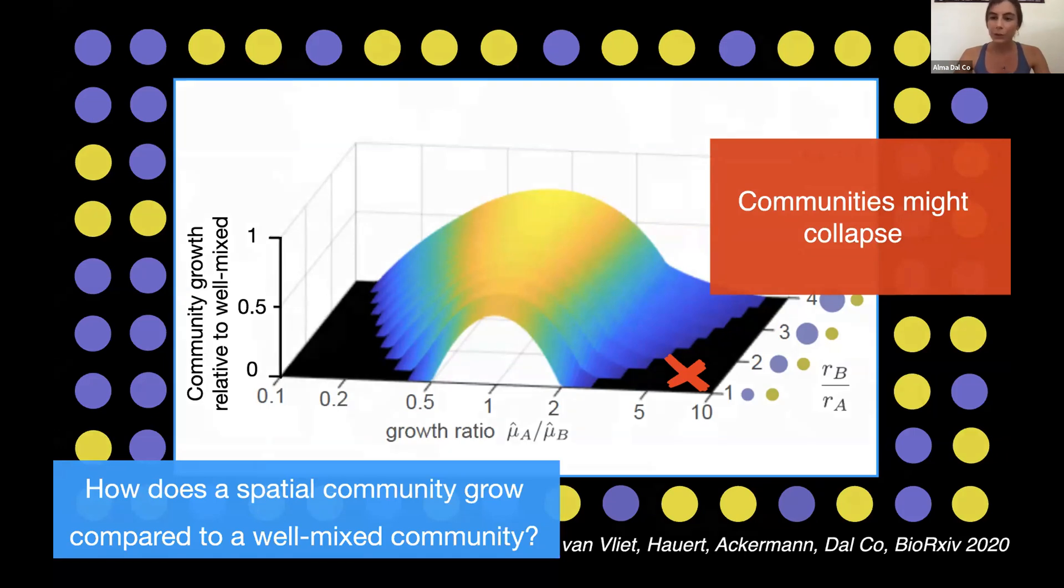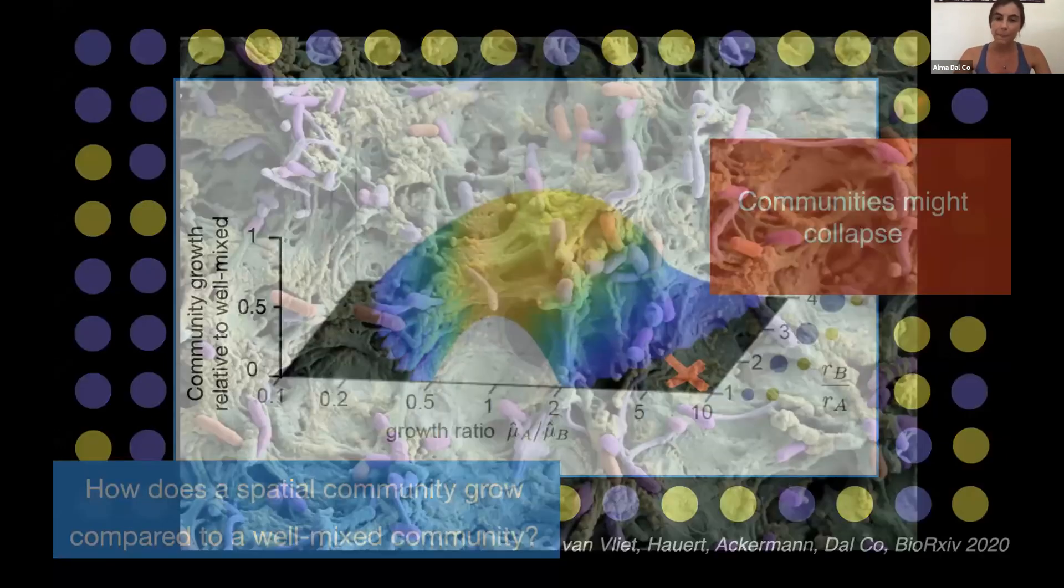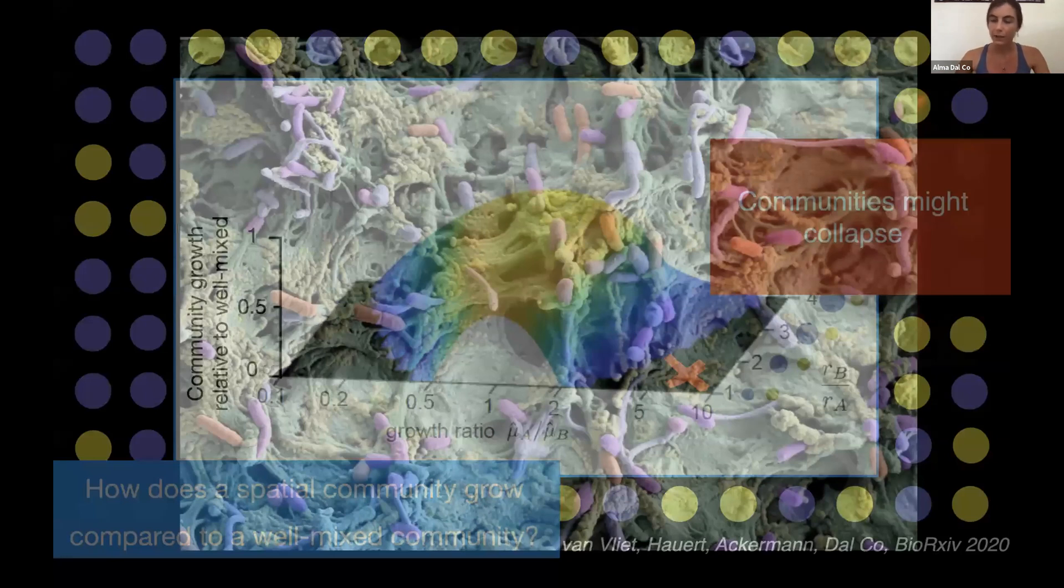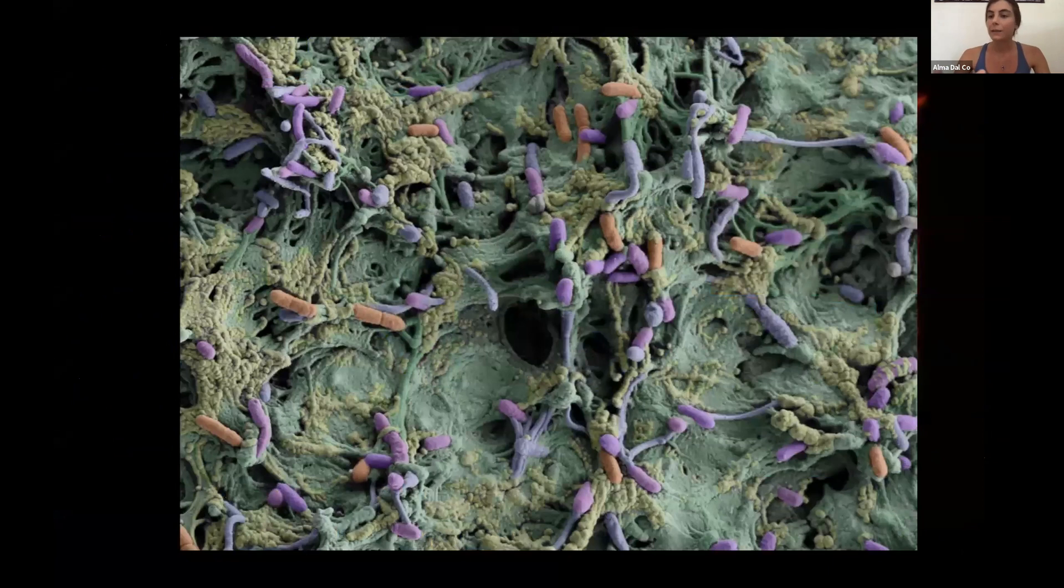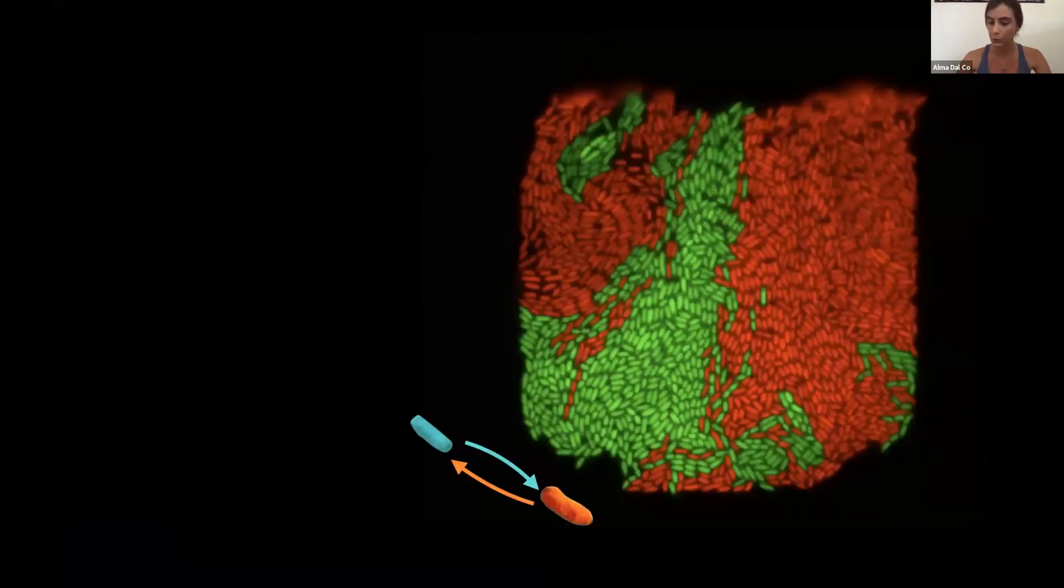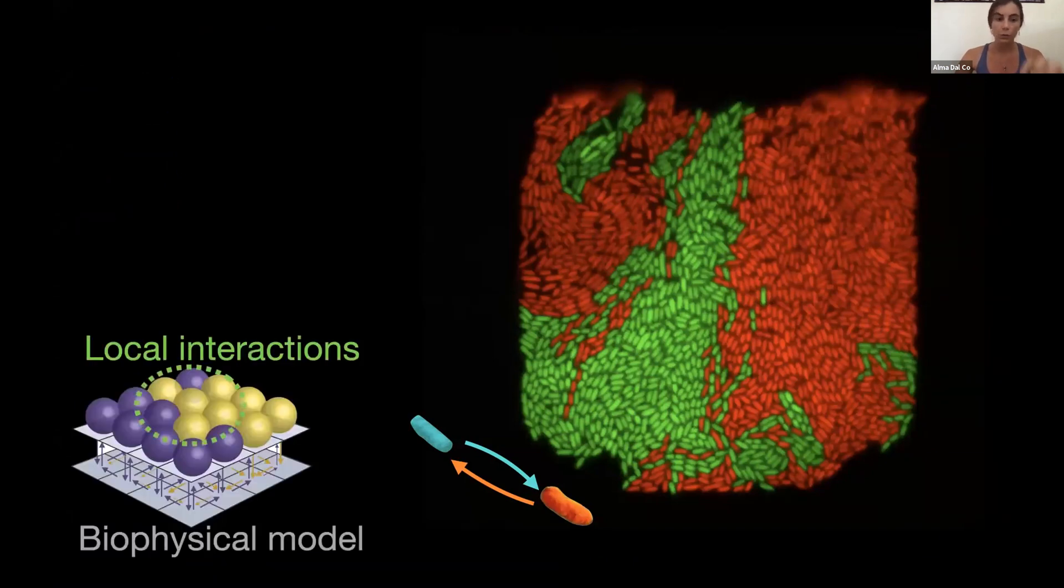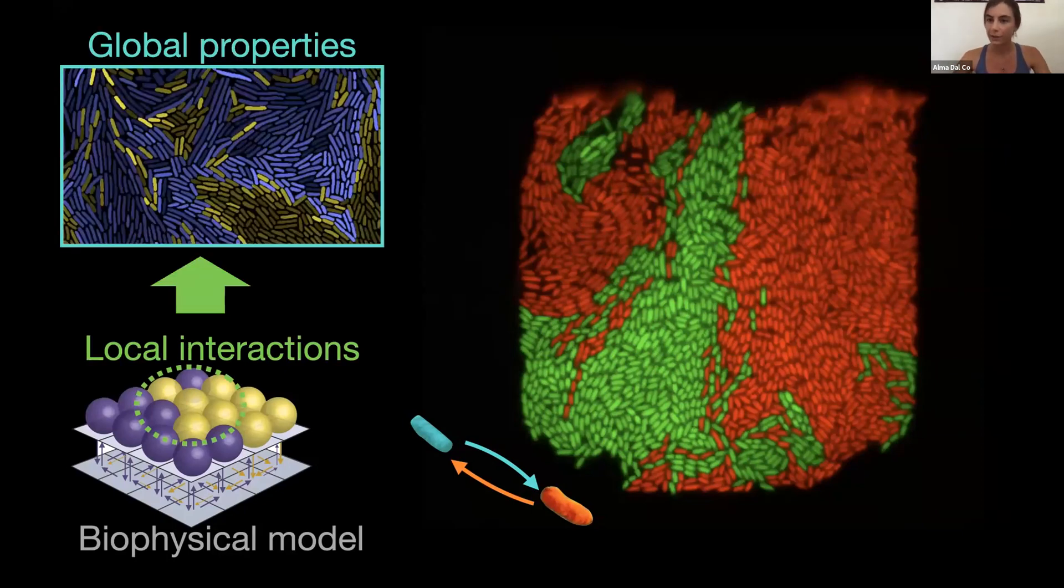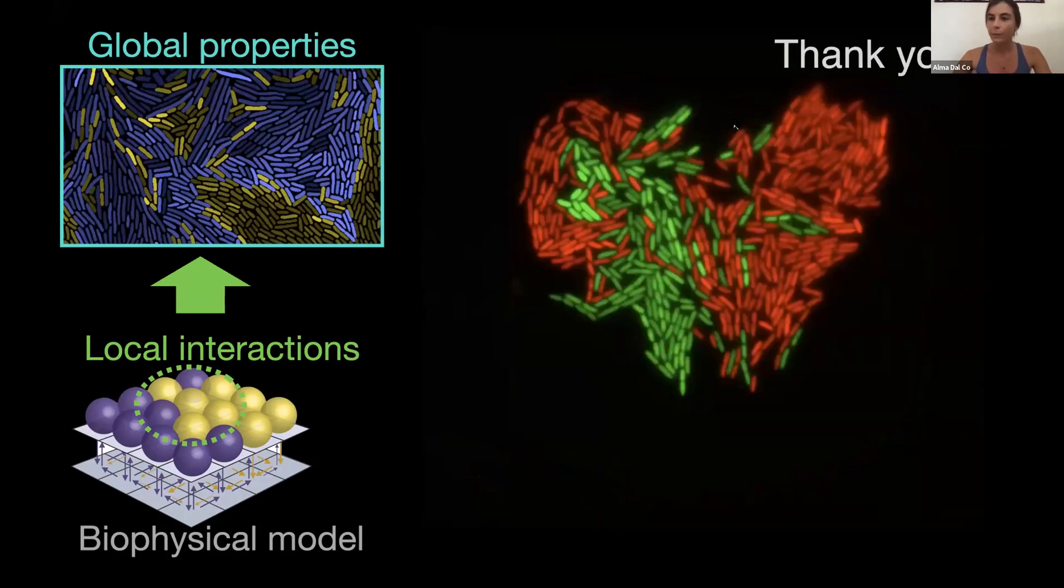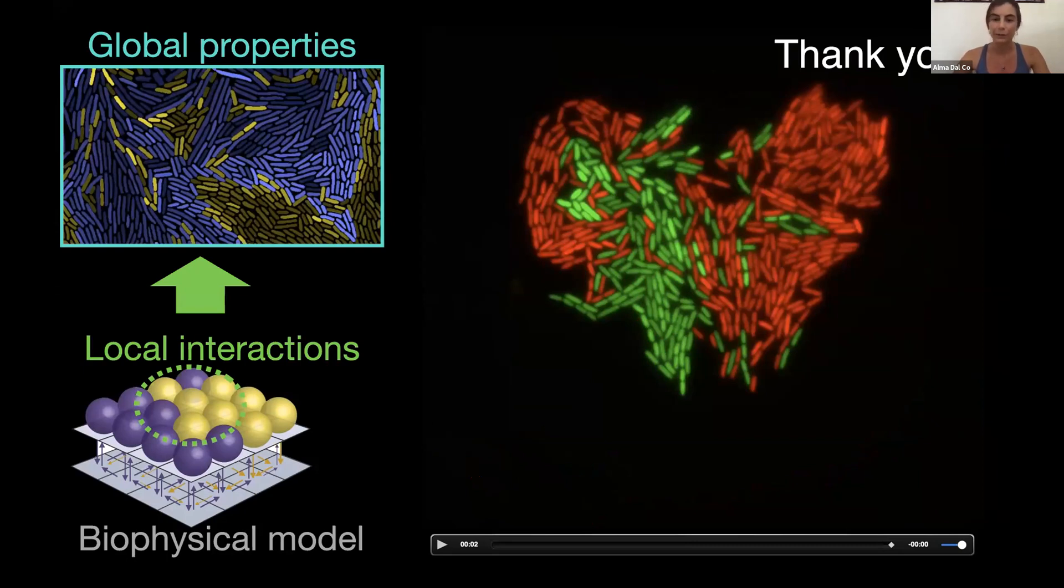At the moment, I'm going to conclude by saying that I believe that these complex systems that we find in nature are all dictated by a few key properties that can be studied using simple systems. And here we used a simple consortium of two cell types that allowed us to scale up properties from the molecular level to the individual level to the community level. And with this, I want to thank you for your attention and I'd like to thank all the people that have collaborated with me on these projects and obviously also the funding. Thank you very much. I'm happy to take questions.